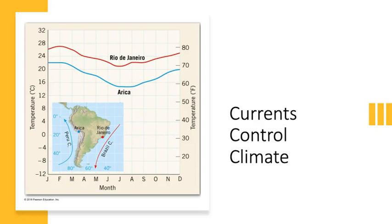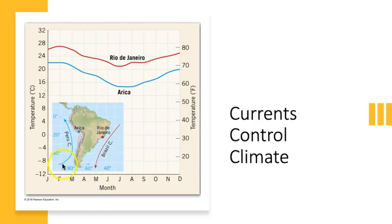For example, Arica, Chile, has noticeably cooler temperatures over the course of a year than Rio de Janeiro in Brazil. This is because of the cooler versus warmer ocean currents off their respective coasts. We see the warm current coming from the equator causing the climate in Rio de Janeiro to be warmer than the climate of Arica, which is controlled by the cool water coming up from Antarctica.